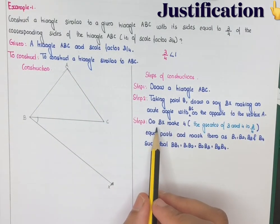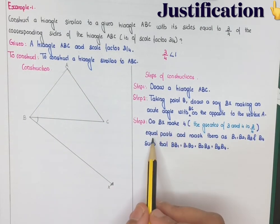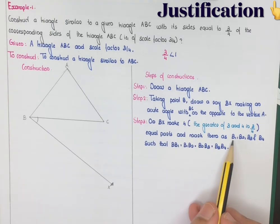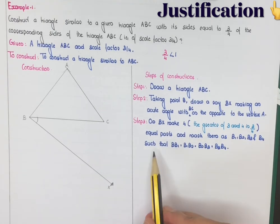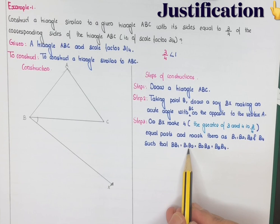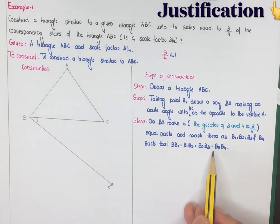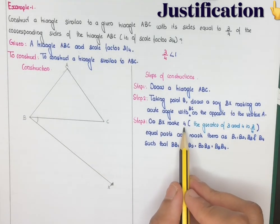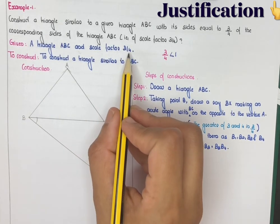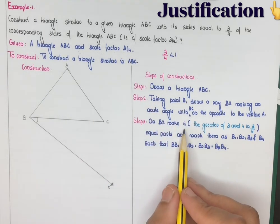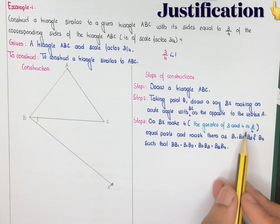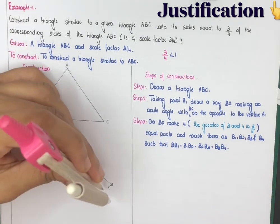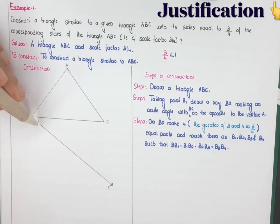Step 3 — on ray BX, make 4 equal parts and mark them as B1, B2, B3, and B4 such that BB1 = B1B2 = B2B3 = B3B4. How do you find the number 4? From the scale factor 3/4, take the greatest number, which is 4. The greater of 3 and 4 in the scale factor 3/4 gives us 4 equal parts on BX.